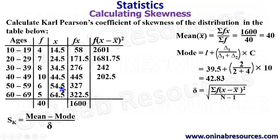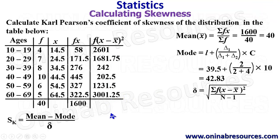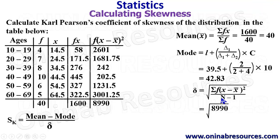54.5 minus 40, squared, multiplied by 6, gives 1231.5. 64.5 minus 40, squared, multiplied by 5, gives 3001.25. We then go ahead to sum them all up: summing gives 8960. We then substitute into the standard deviation formula, which gives the square root of 8960 divided by n minus 1. Our n is 40, so 40 minus 1 gives 39.